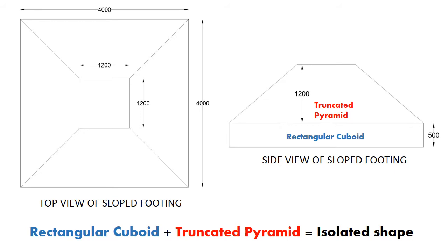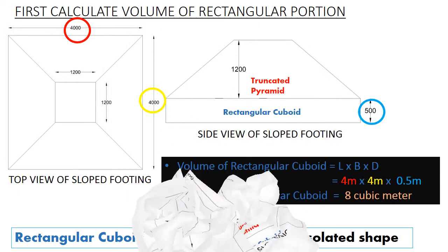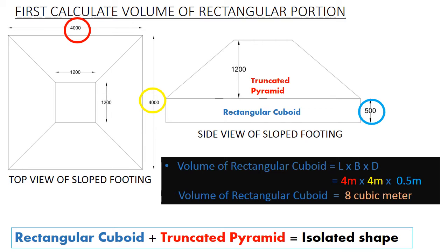Now let's calculate the volume of this sloped footing by using the formula. First, let's calculate the volume of the rectangular cuboid portion. The equation for volume of rectangular cuboid is multiplication of its length, width, and depth. Here the length is 4000 mm, which is 4 metres; width is also 4 metres; and depth is 500 mm, which is 0.5 metres. By multiplying these 3 dimensions we get 8 cubic metres volume for the rectangular cuboid portion.